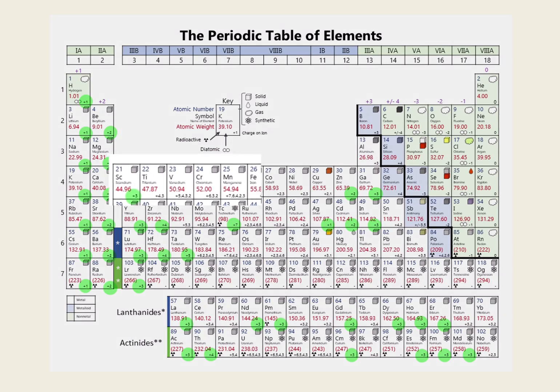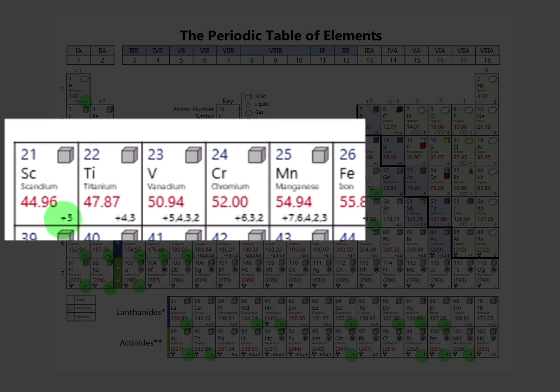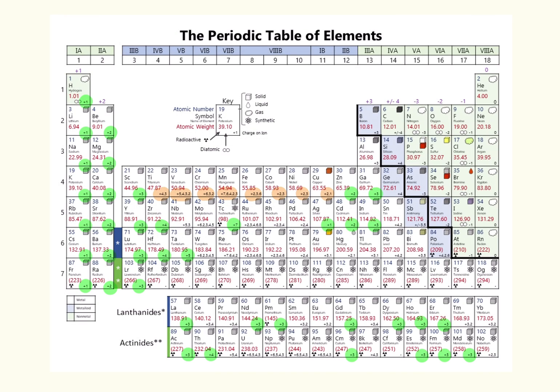And notice there are a number that have two or more possible charges. So-called Type 2 metals. That would be very difficult to memorize. So we're going to make it a lot simpler for this class.